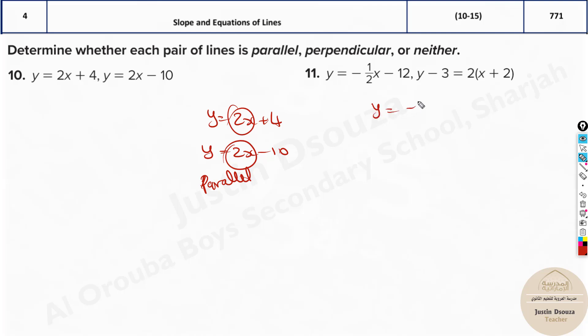Now, over here, y equals negative one-half x minus 12. That's in slope-intercept form. Over here, this is not in slope-intercept form: y minus 3 equals 2 times (x plus 2). Let's solve it out. y minus 3 equals 2x plus 4, when you multiply both terms. Now, add 3 to both sides. It becomes y equals 2x plus 7.